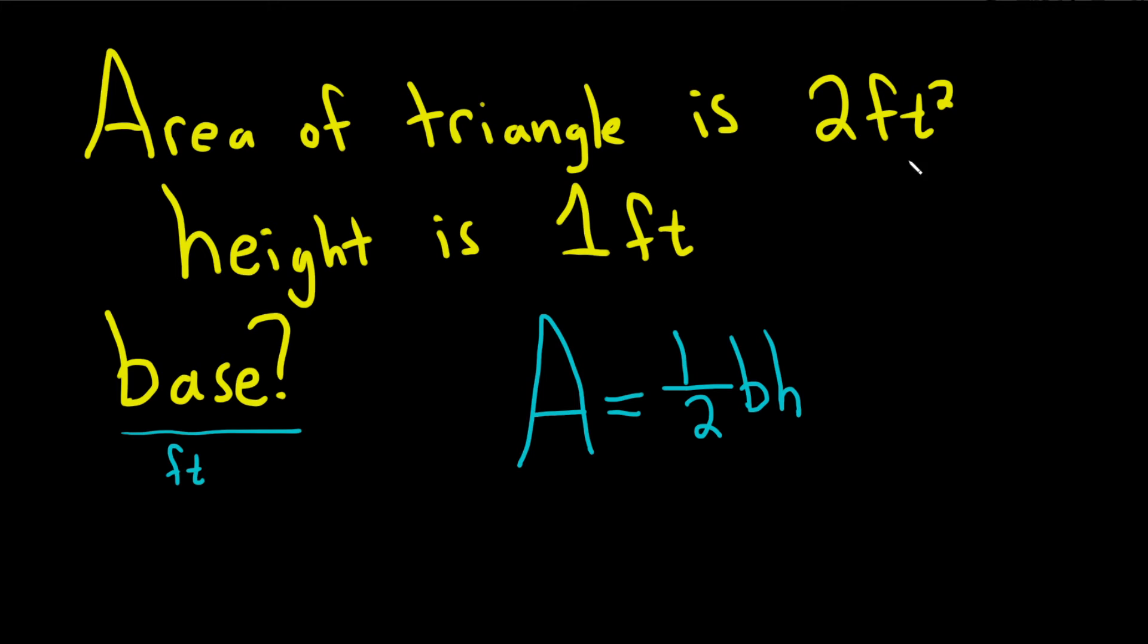Okay, so area is 2 feet squared, so that's just 2, equals 1 half, the base is B, we don't know it, and the height is 1, so times 1.